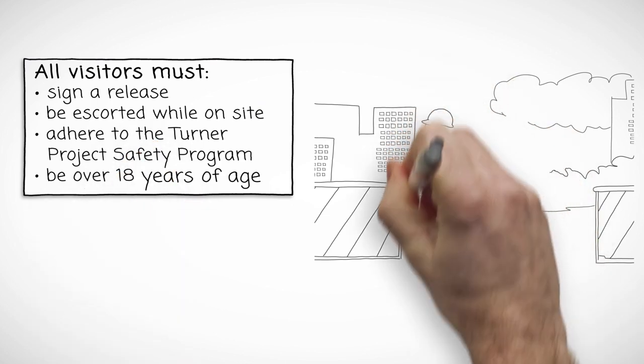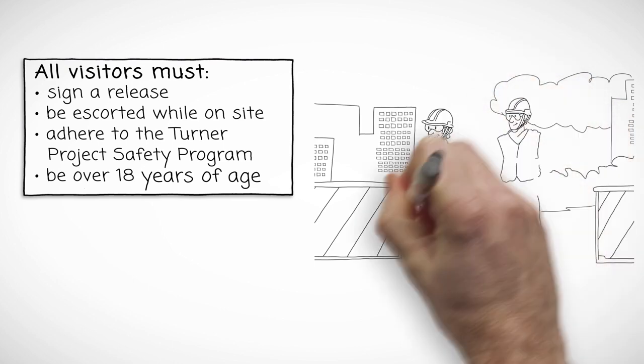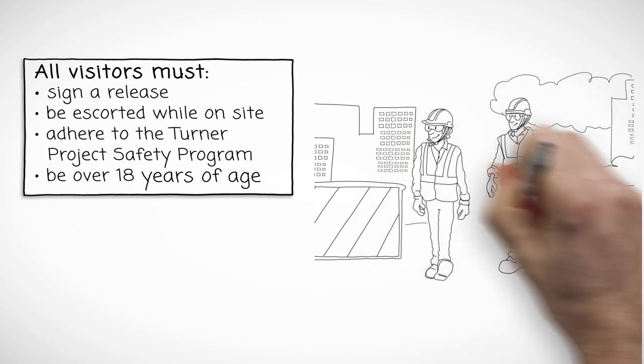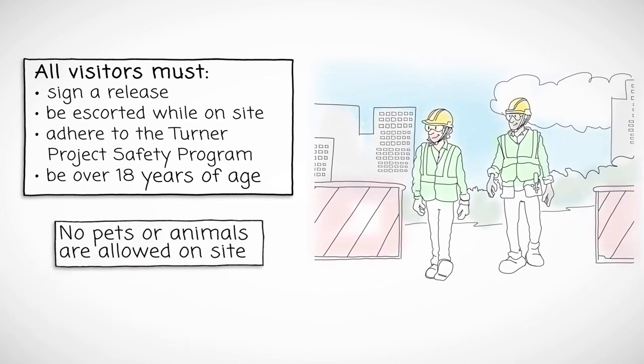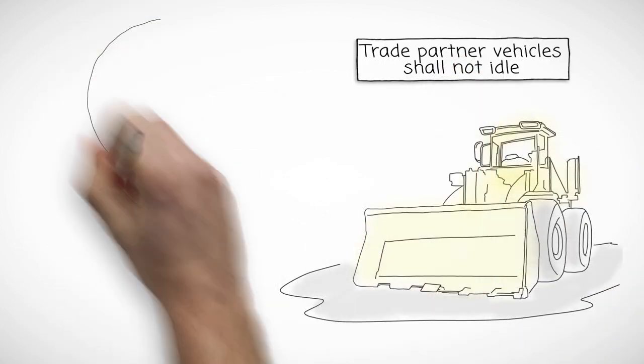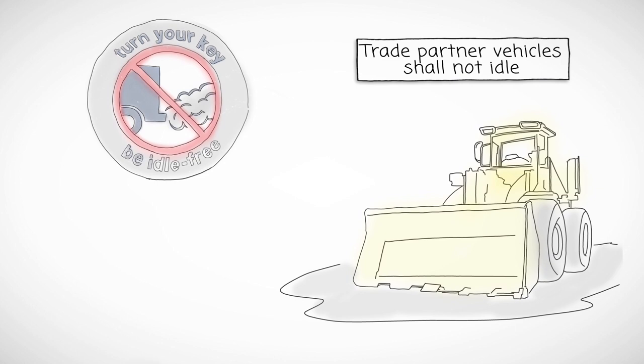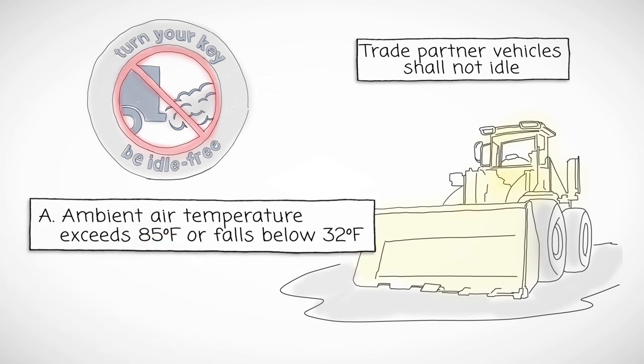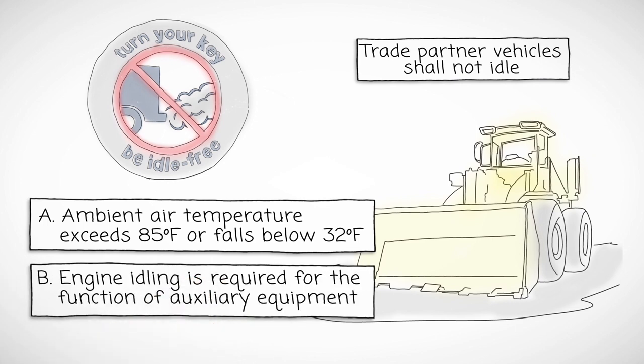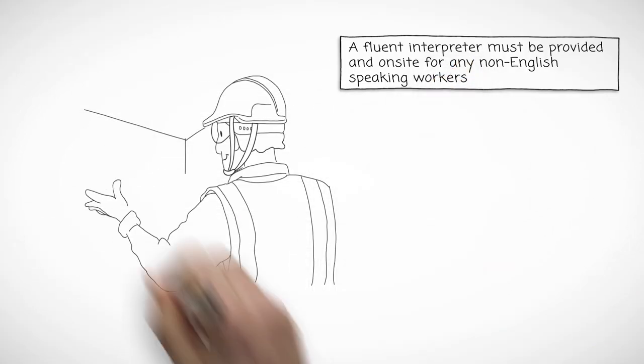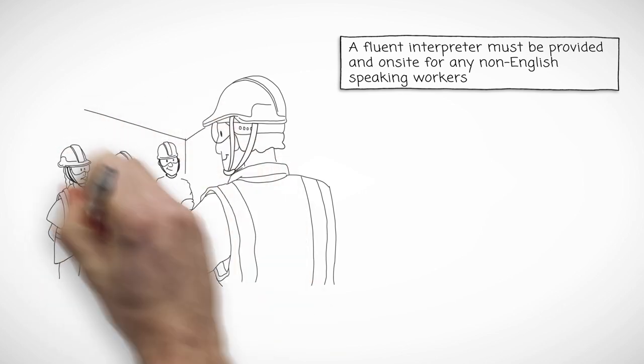All visitors must sign a visitor release at the project site office. All visitors must be escorted while on site and must adhere to the Turner Project Safety Program and be 18 years of age or older. No pets or animals are allowed on site. All trade partner vehicles within the project site fence including but not limited to transportation and construction equipment, delivery trucks, and personal or company trucks shall not idle. The only allowable exceptions to the standard are as follows. A. Ambient air temperature exceeds 85 degrees Fahrenheit or falls below 32 degrees Fahrenheit or as defined by local or regional temperature limits, whichever is stricter. B. Engine idling is required for the function of auxiliary equipment, i.e. cranes, concrete pumps, etc.